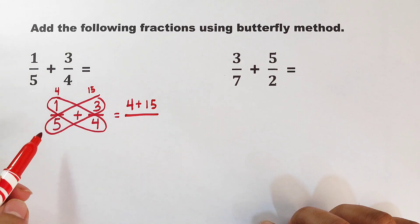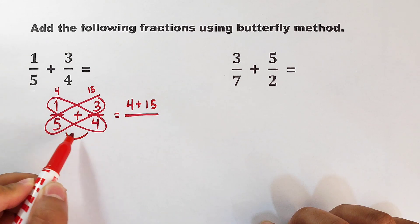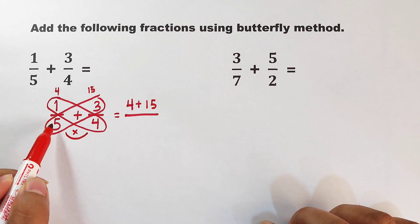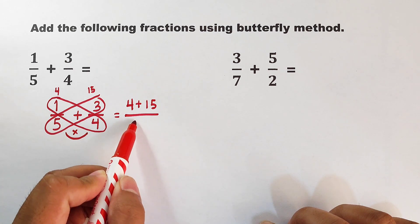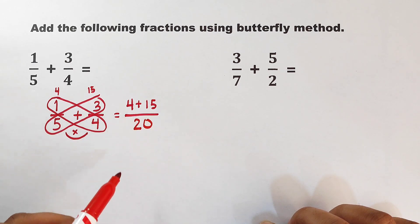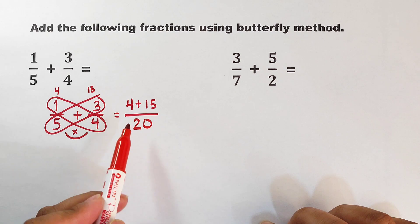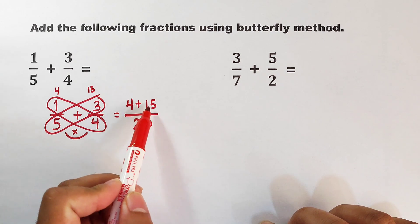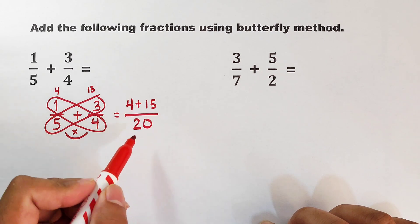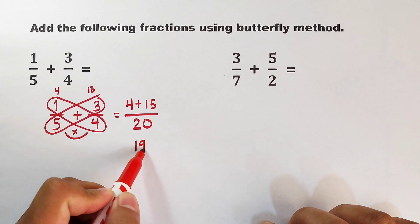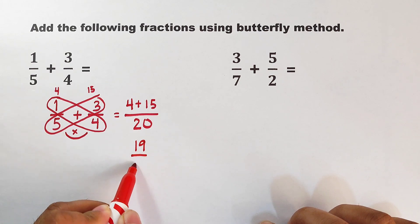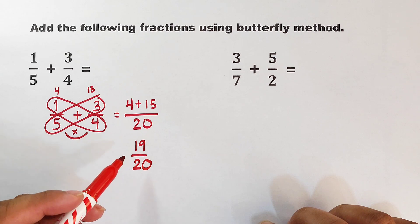And now for your denominator, multiply these two numbers: we have 5 times 4 which is 20. As you can see, all we need to do is add these numerators: 4 plus 15 which is equal to 19 over your denominator which is 20.